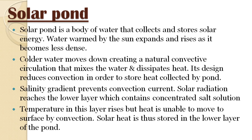In a solar pond, when the sun shines, the water becomes warm and rises. Colder water sinks down to the lower surface. This creates a natural convective circulation which mixes the water and dissipates heat. The design of a solar pond is meant to reduce this convection.